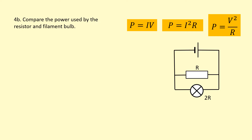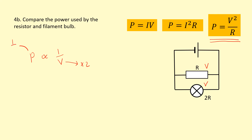Same question, except now they're in parallel. If they're in parallel, they have the same voltage V. Using the equation P equals V squared over R, and treating voltage as a constant, power is inversely proportional to resistance. So if the filament bulb has twice the resistance, it should have half the power.